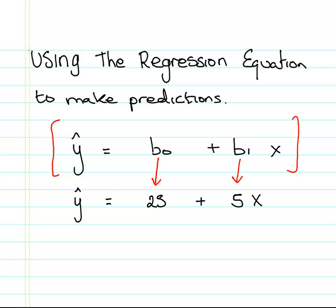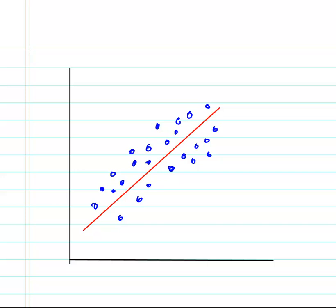Essentially what this is, it's a line through the data. This is the regression line here, this red line fitted through the data. The intercept is down here at 25, and for each unit increase of x, y increases by 5. That's the general gist of it.